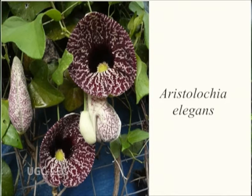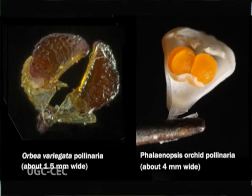In Aristolochia elegans, all five types of microspore tetrads are found. On maturity, these microspores get separated by the activity of the enzyme callase, which disintegrates the callose present in the pollen tetrad. However, in some plants of the family Asclepiadaceae, such as Calotropis procera, and Orchidaceae such as orchids, the spores remain together in a single mass called pollenium.